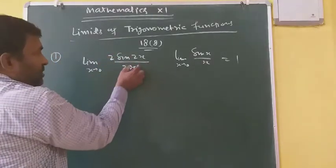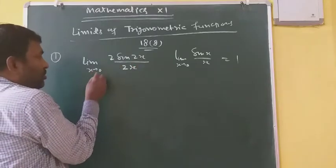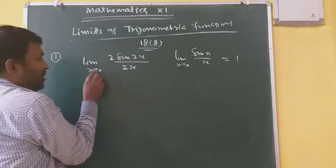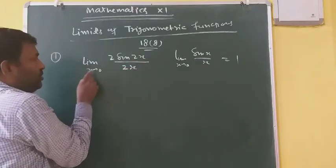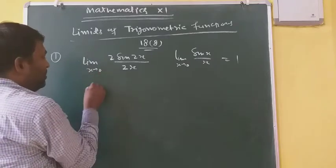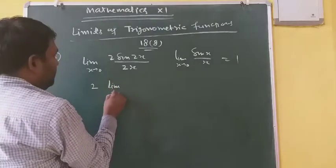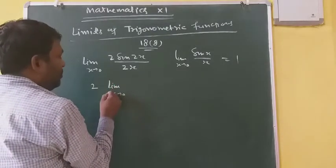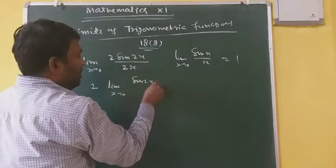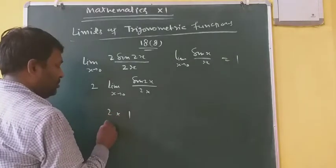So we get sin 2x upon 2x. Since x tends to 0, then 2x also tends to 2×0 = 0. So we can take 2 out, and limit as 2x tends to 0 of sin 2x upon 2x equals 1. This gives 1 into 2, which is 2. This is your answer.